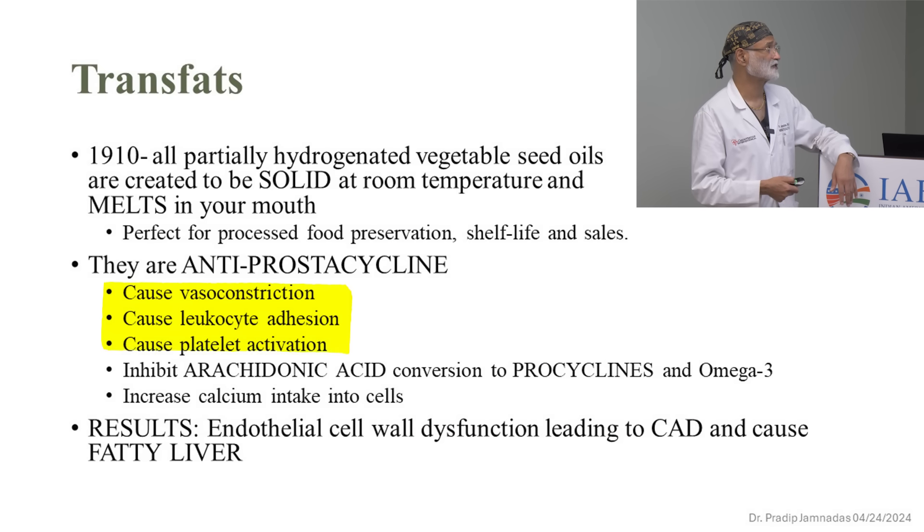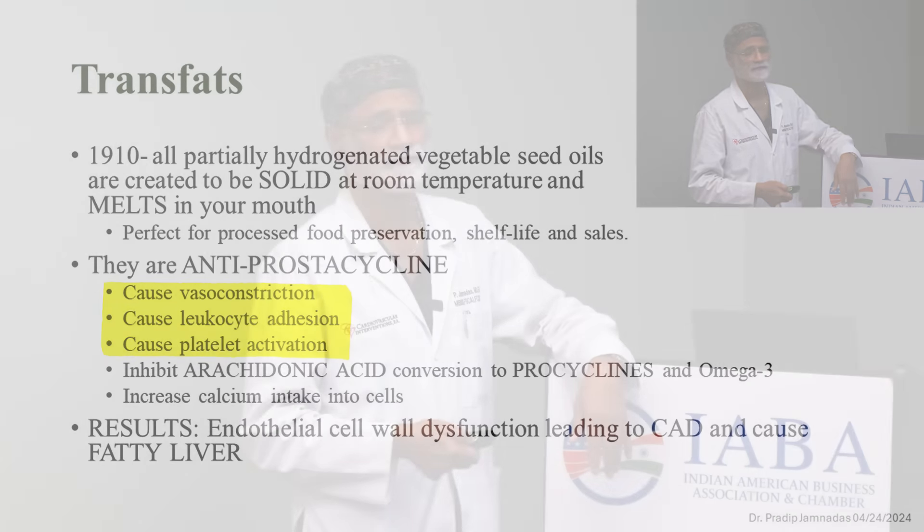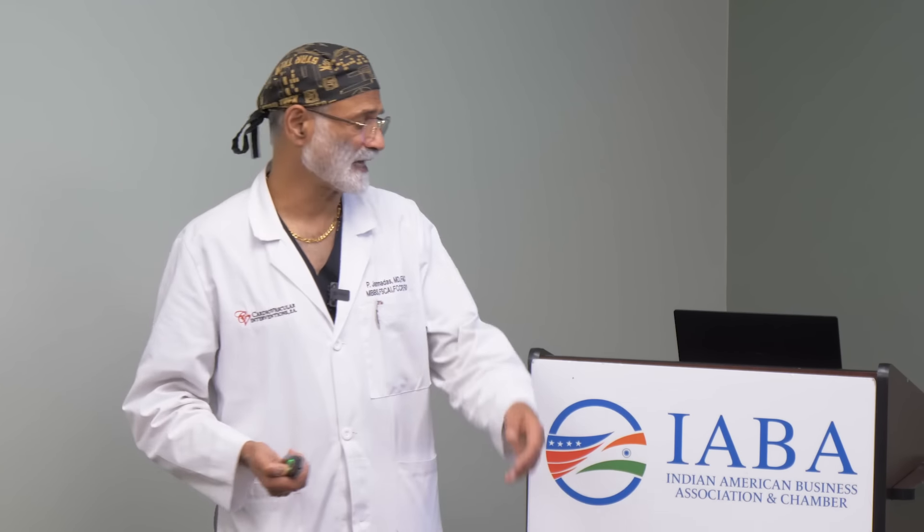These omega-6 rich vegetable oils cause vasoconstriction, leukocyte adhesion, and platelet activation — a huge problem. Why am I interested in all this? Because these patients come in with coronary artery disease and keep getting it — another stent every year, bypass surgery. But bypass doesn't make you live longer. Stents don't make you live longer. They take away your angina, sure — but the underlying disease continues if you don't address the root cause.